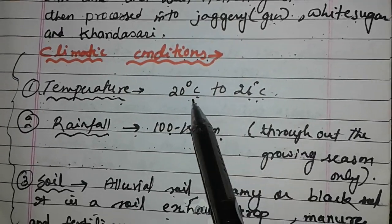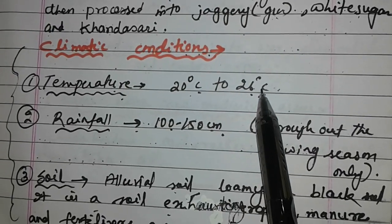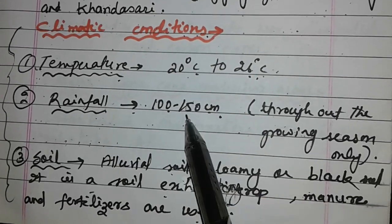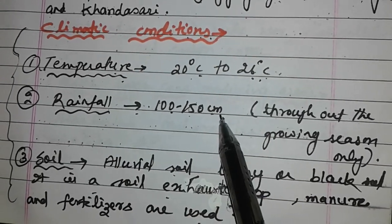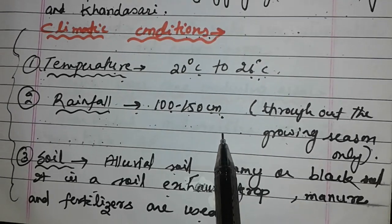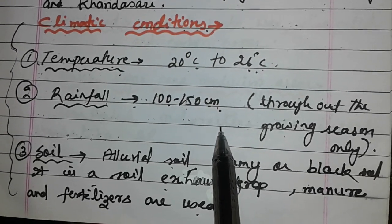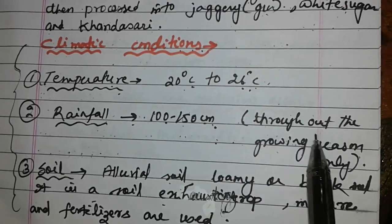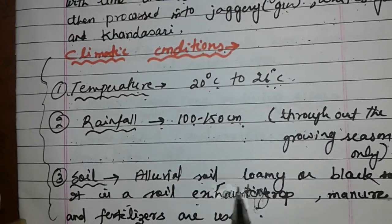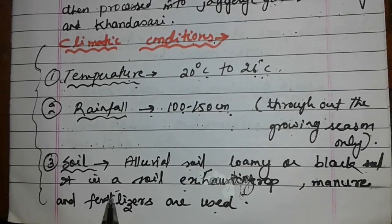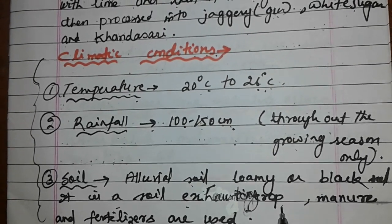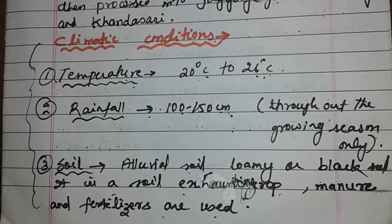Climatic conditions: temperature should be between 20 to 26 degrees centigrade, though a little variation may also be there. Sugarcane can resist rainfall of 100 to 150 centimeters throughout the growing season, but at the time of harvesting, rain will damage the crop. Soil: alluvial, loamy, or black soil. It is a soil-exhausting crop, so manures and fertilizers are used.